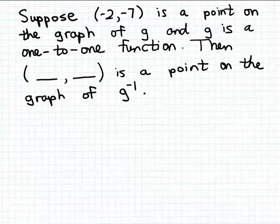In this example, we're given the coordinates for a point on the graph of a one-to-one function named g. Because g is a one-to-one function, that means it has an inverse function. What we want to do is find a point on the graph of this inverse function, g inverse.